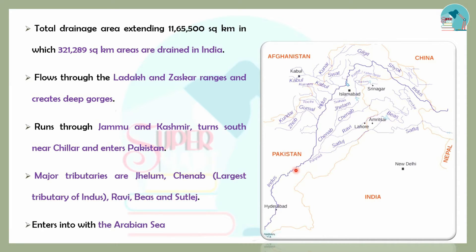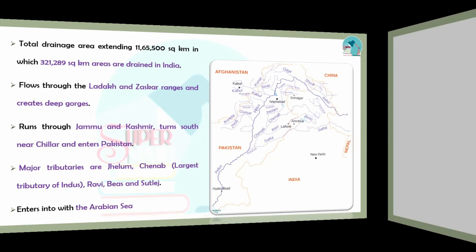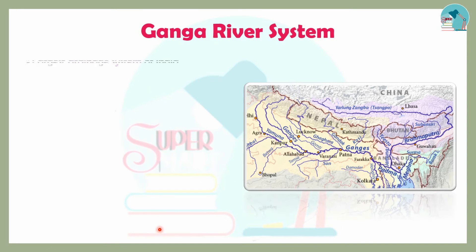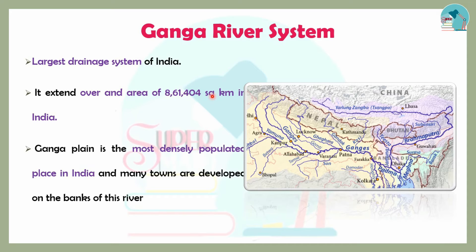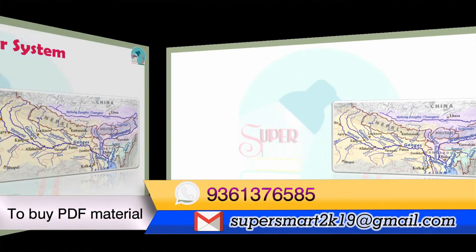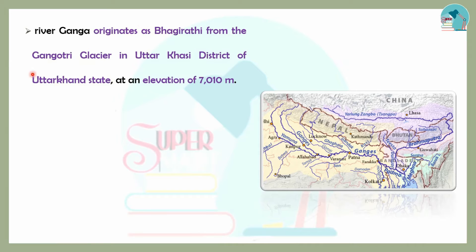The Indus basin in India covers 8,61,404 square kilometers. The Ganga Plain is one of the most densely populated places because towns developed along the river banks. The Ganga originates at an elevation of 7,010 meters and has a length of 2,525 kilometers.